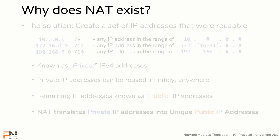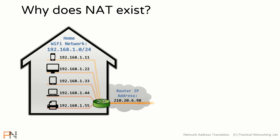Let me show you how that actually conserves IP address space. Here we have a typical home Wi-Fi network using the internal address space of 192.168.1.0/24. Each device on this network has its own IP address in that network — the mobile phone has 192.168.1.11, the desktop PC has .22, the tablet has .33, and so on. Since these devices are connected to the internet, they each have an IP address in this private address space.